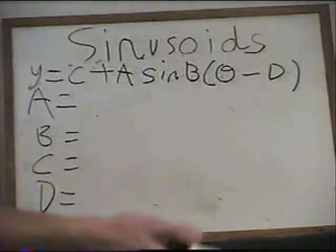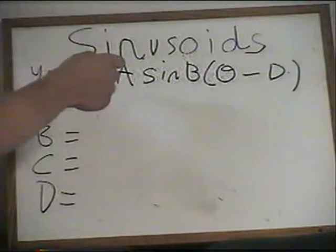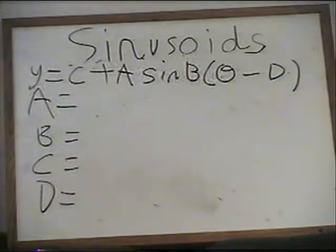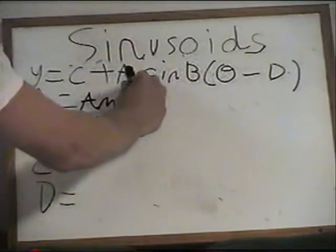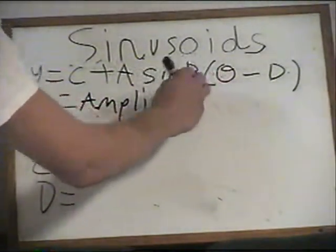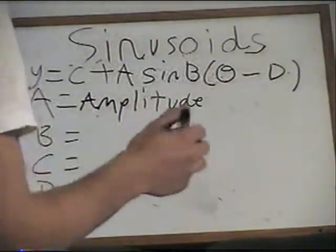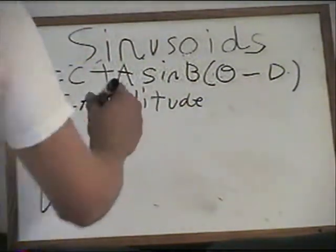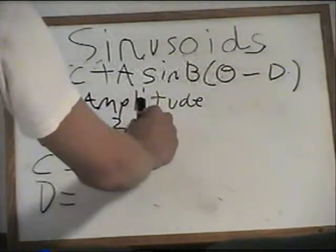To begin with, sinusoids are generally represented by the equation C plus A sine or cosine of B times theta minus D. In the equation, A represents the amplitude, which is similar to the vertical dilation in a regular graph. B represents the period, but it's a little more complicated.